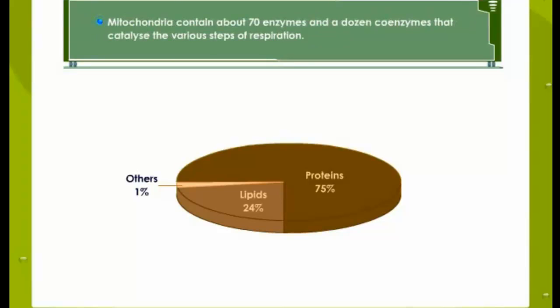Mitochondria contain about 70 enzymes and a dozen coenzymes that catalyze the various steps of respiration.